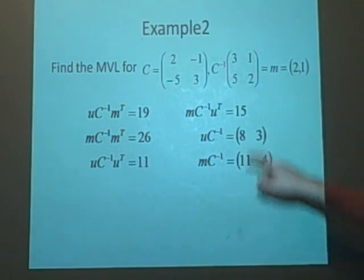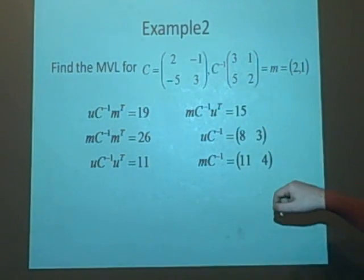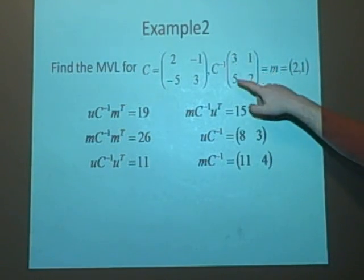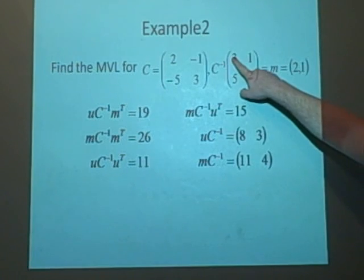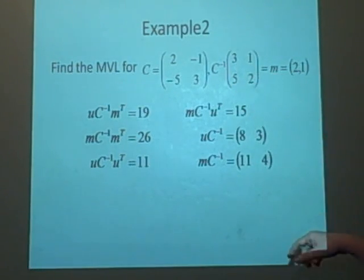And for the M as well, you just put the M in front, and then it ends up being, because of the way this is, I think it's 2 times that plus that, 2 times that plus that. So we've got 11, 4.